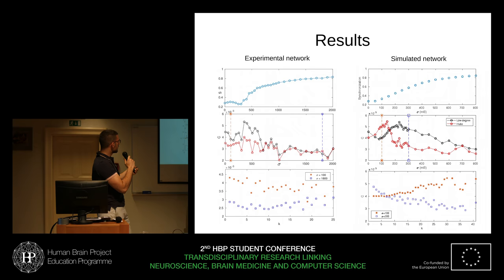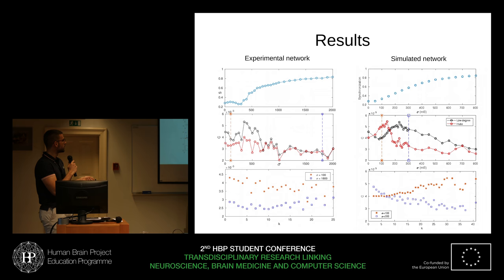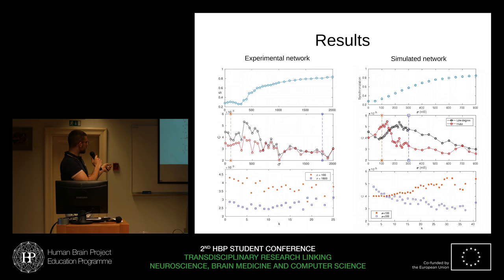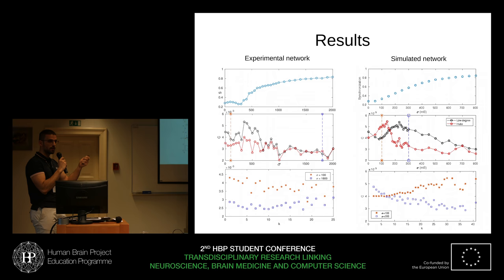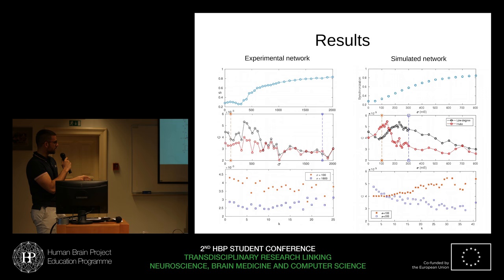These are the main results. This is the experimental network and this is the simulated network. We see that when we synchronize the network — where this axis is the synchronization and this is the coupling strength — when we increase the coupling strength, both the experimental and the simulated network increase in synchronization, and we see mainly two interesting points. These cuts correspond to these correlations. In the experimental network, we don't have such a well-defined topology as in the synthetic one, but we still see that the results of a positive and a negative correlation between dynamical complexity and degree still hold; we see the tendency in both of them, and the behavior of the curves is remarkable.